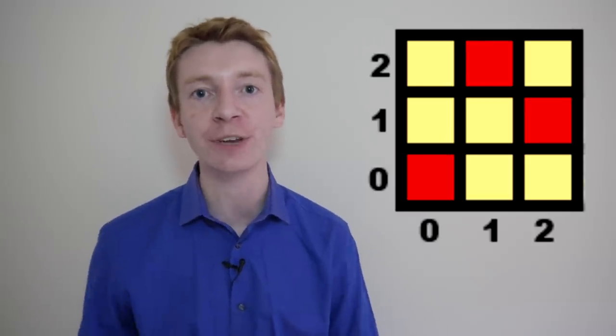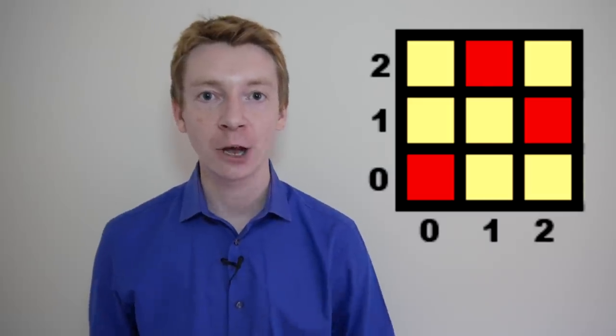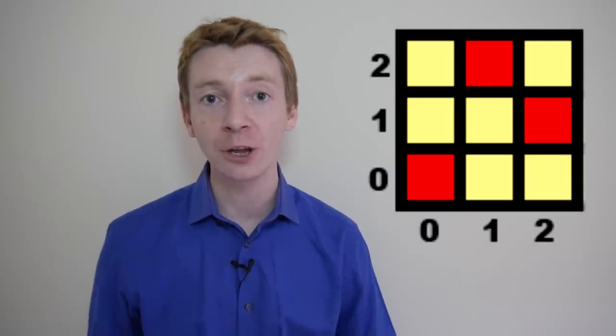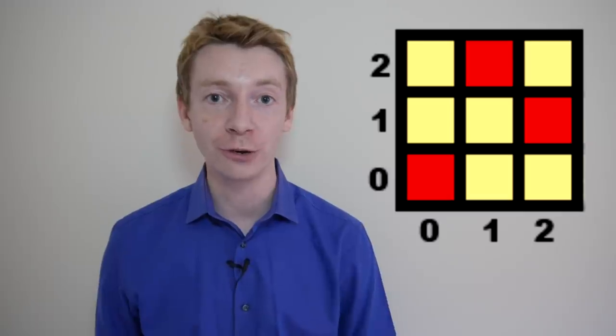You can reach winning squares, but you can't reach the goal itself. So in this coordinate system, the losing squares are 1-2 and 2-1.